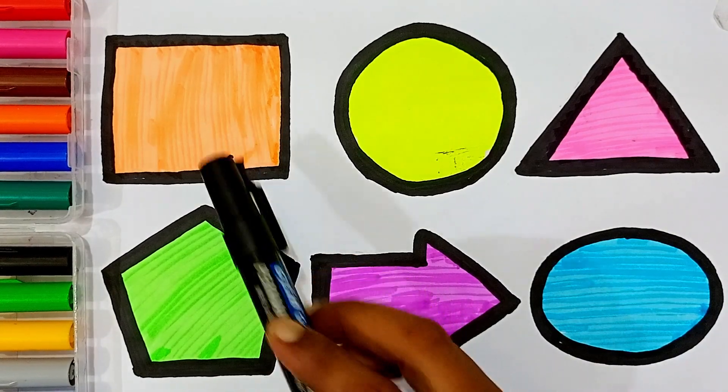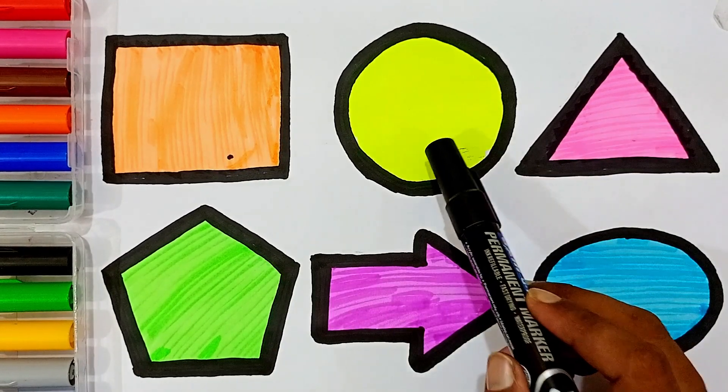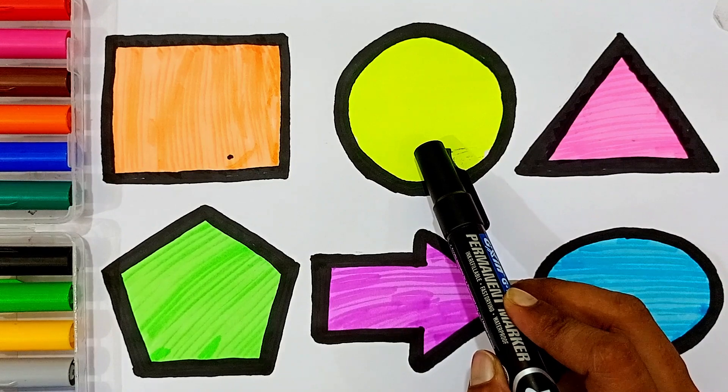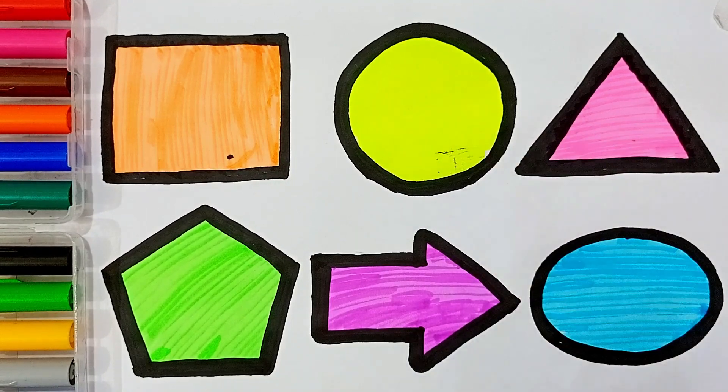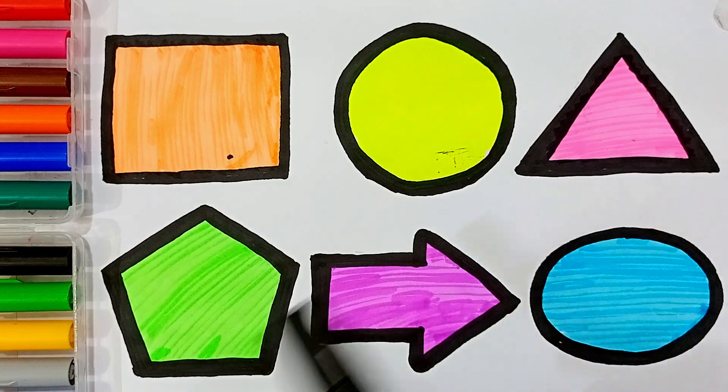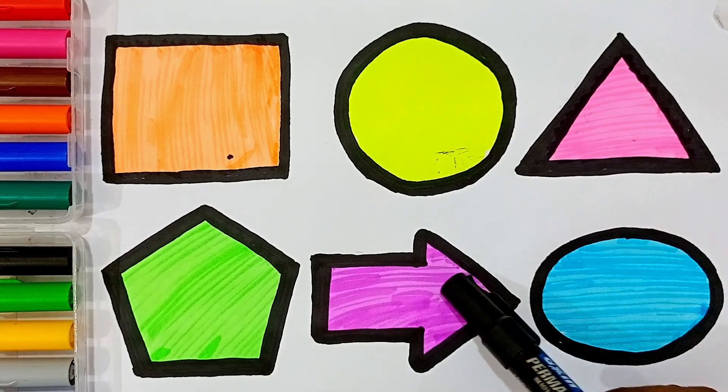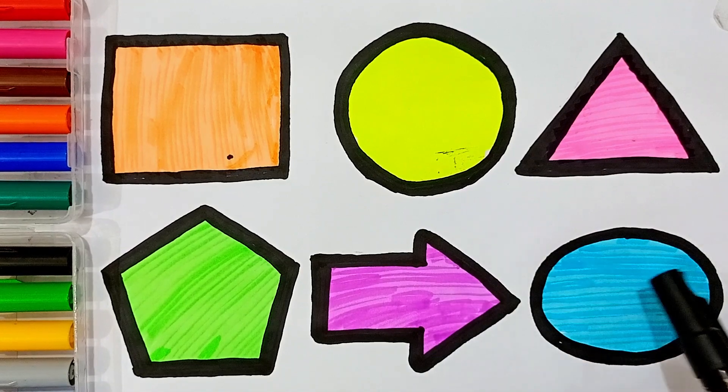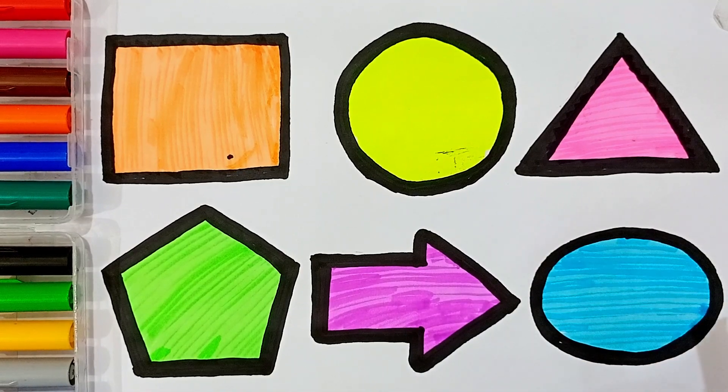Orange color square, yellow green color circle, pink color triangle, green color pentagon, purple color arrow, blue color oval.